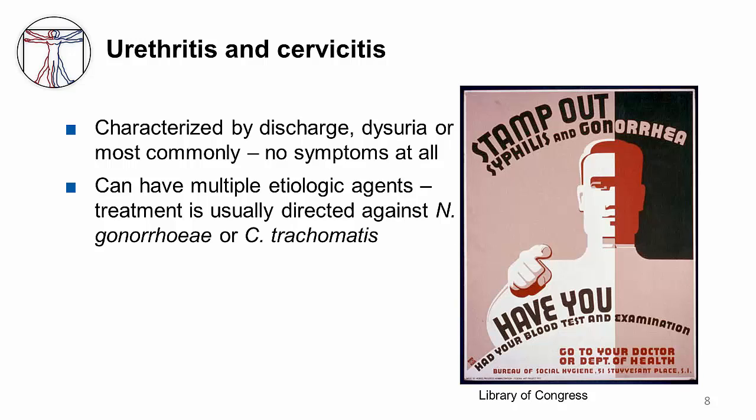Overall, urethritis and cervicitis are characterized by discharge, dysuria, or more commonly, no symptoms at all. There are multiple etiologic agents implicated, but treatment is usually directed against Neisseria gonorrhea or Chlamydia trachomatis.